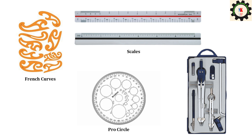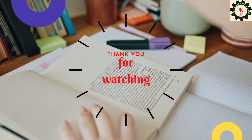A pair of compasses are used to draw circles and arcs, and are used in conjunction with scales. Plane dividers are used to divide straight or curved lines into a prescribed number of equal parts, for transferring dimensions, and for setting distances from a scale to drawings.